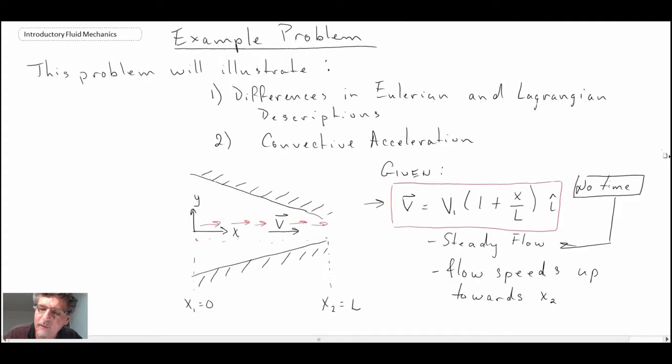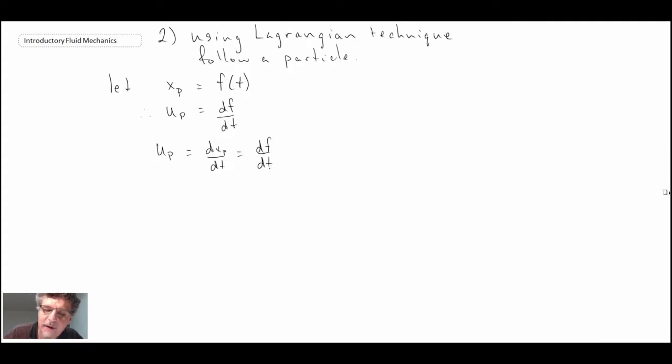Well, we know from the problem statement what the particle velocity is. It's given right here. So let's pull that into our expression. We then get v1 times 1 plus x over l equals v1 times 1 plus f over l, where I've now made the substitution for x inputting f, as we've denoted x as being little f.